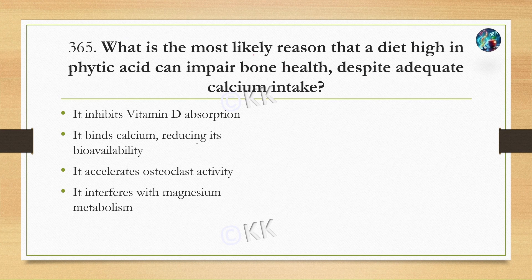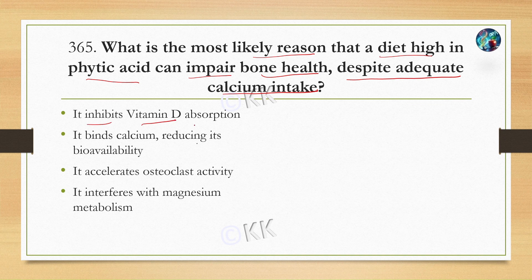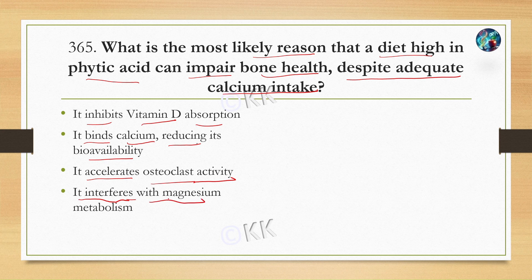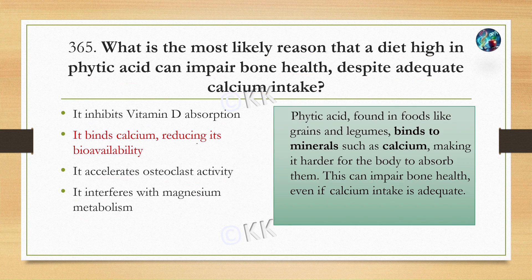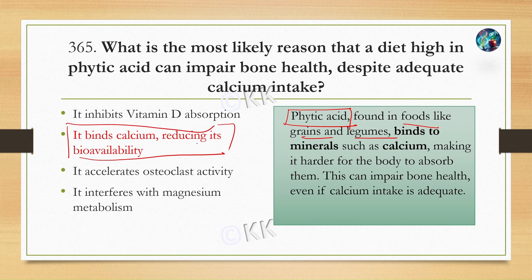What is the most likely reason that a diet high in phytic acid can impair bone health despite adequate calcium intake? Option A: It inhibits Vitamin D absorption. Option B: It binds calcium, reducing its bioavailability. Option C: It accelerates osteoclast activity. Option D: It interferes with magnesium metabolism. The correct option is option B — it binds calcium, reducing its bioavailability. Phytic acid is found in foods like grains and legumes, and it binds minerals such as calcium, making it harder for our body to absorb them, impairing bone health even with adequate calcium intake.